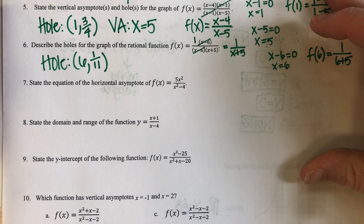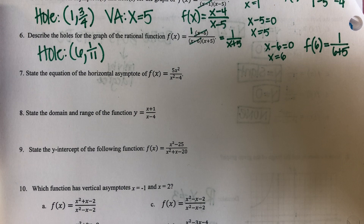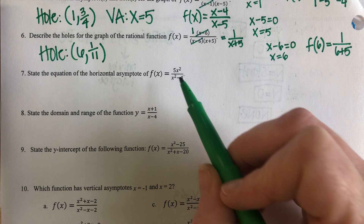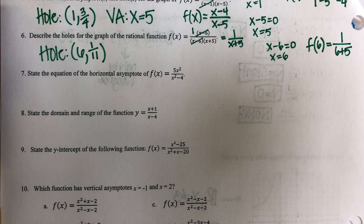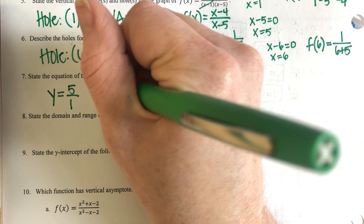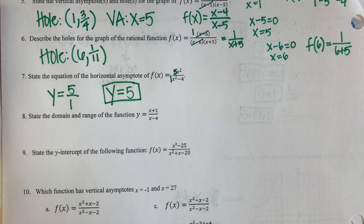Number seven: state the equation of the horizontal asymptote of F of X. I'm back to where I compare my exponents in the numerator and the denominator. The exponents are two and two, so that means my exponents are the same. I'm going to divide my coefficients. So Y equals five over one. I know that five over one is simply equal to five. That is my horizontal asymptote.